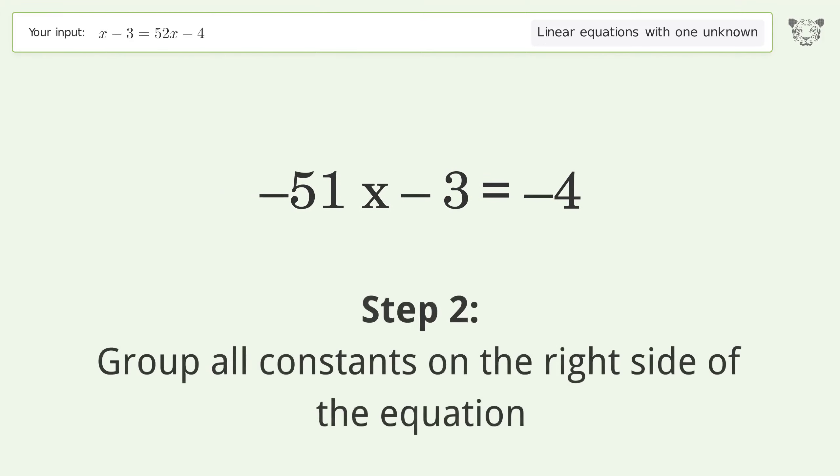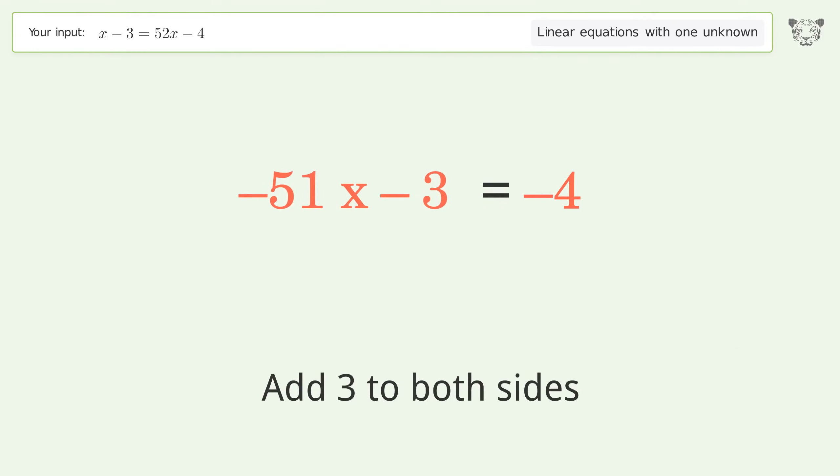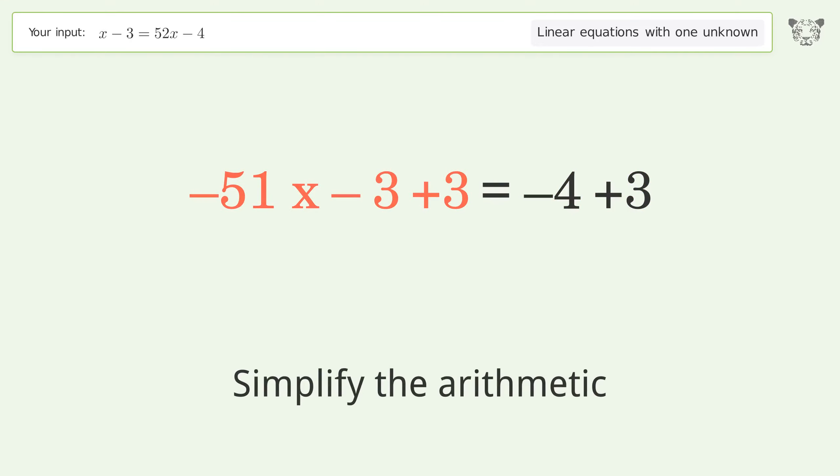Group all constants on the right side of the equation. Add 3 to both sides. Simplify the arithmetic.